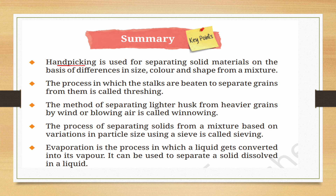The process in which the stalks are beaten to separate grains from them is called threshing. So threshing is used to separate stalks from grains. The method of separating lighter husk from heavier grains by wind or blowing air is called winnowing.